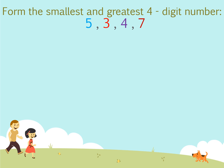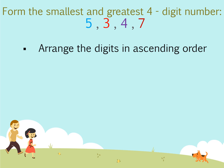Now look at the next question. Form the smallest and greatest 4-digit number using the digits 5, 3, 4, and 7. To form the smallest number using these digits, what do we have to do? Yes, we arrange the digits in ascending order. So we arrange the digits as 3, 4, 5, 7. Here 3 is smaller than 4, 4 is smaller than 5, and 5 is smaller than 7.